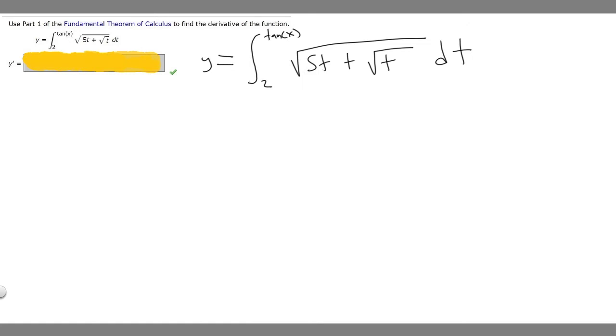If we plug it into this function here, we're going to call this f(t). All you want to do is plug it in. So it would become the square root of 5 times the tangent of x plus the square root of tangent of x.